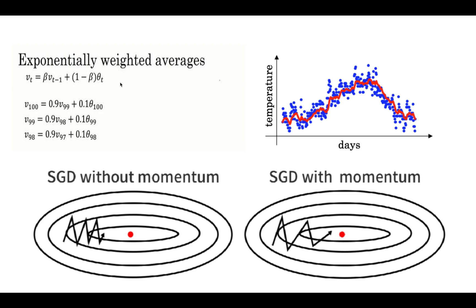But if you use these equations — where VT is the previous value and the current average is computed from the previous feed to the current — putting beta at 0.99 and calculating using this equation, you get the red color graph with much less oscillations.